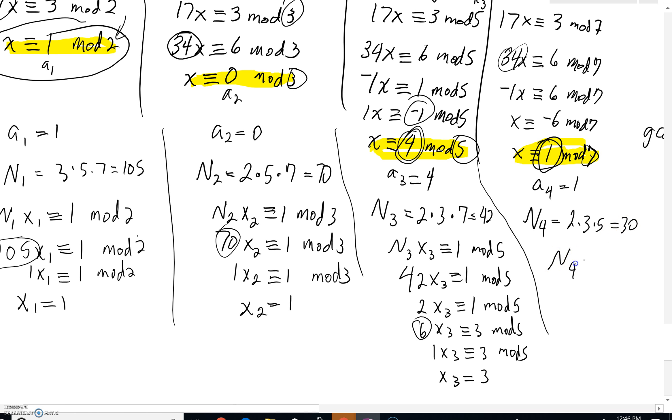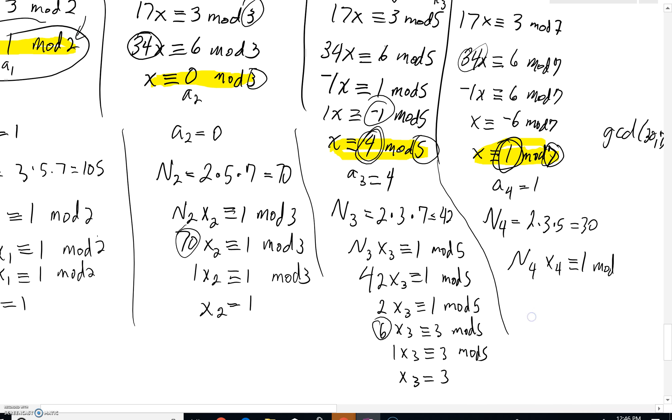Finally, we've got to solve our n sub 4 times x sub 4 is congruent to 1 with this current mod of 7. You're really saying 30 x sub 4 is congruent to 1. And what can we do to solve this one? Again, 30, when you divide by 7, you'd have a remainder of 2. 28 is a multiple of 7. This is two steps higher.